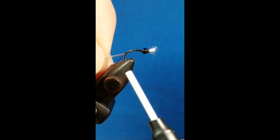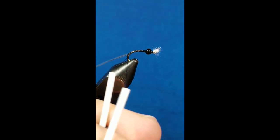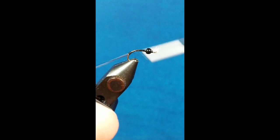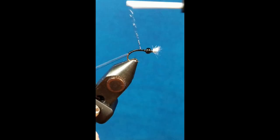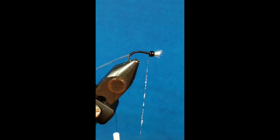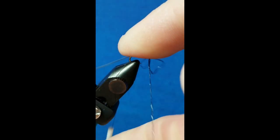I'm still going to maintain tension on the thread here, and I'm just going to take that body quill and wrap all the way up to the bead with it. We maintain that tension so that the tubing doesn't squirm out of the way on us. Once we get there, I'm just going to come in and put a quick half hitch in with the body quill. Snip off the excess.